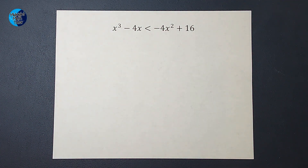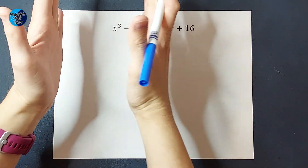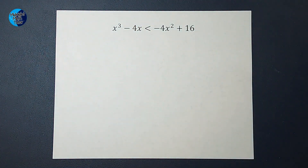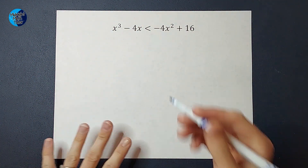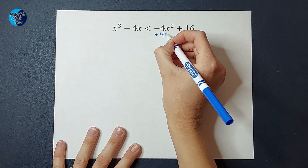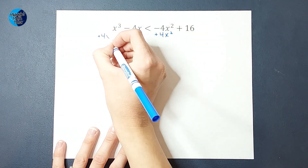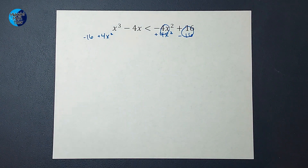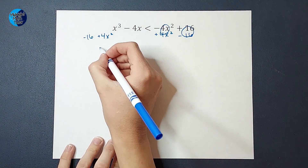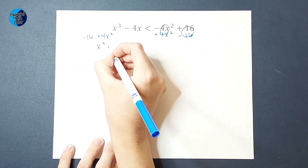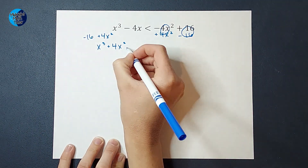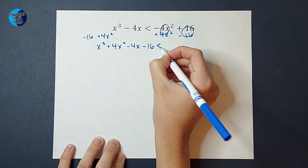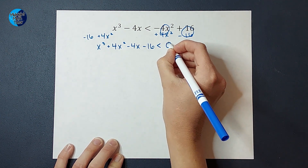The first thing I'm going to do is get everything on the same side, so I have variables and numbers on one side and just a zero on the other side. That makes it really easy to work with. I'm going to add 4X squared to both sides and subtract 16 from both sides. Then I'll write it in descending order: X cubed plus 4X squared minus 4X minus 16, less than or equal to zero.